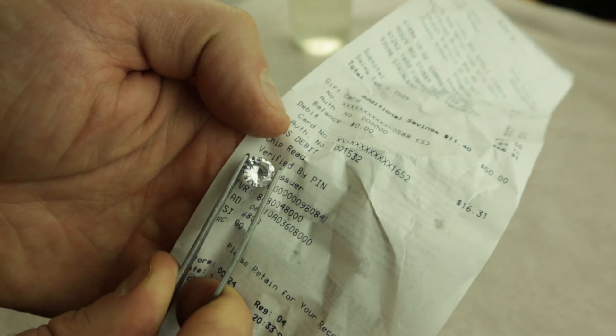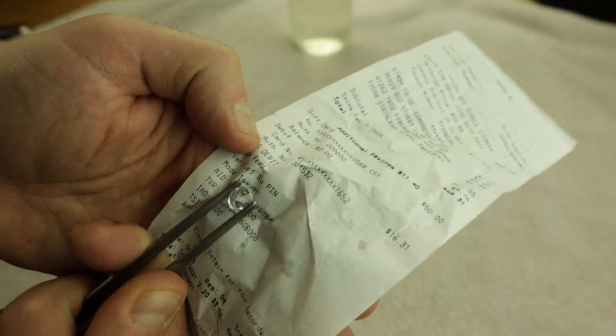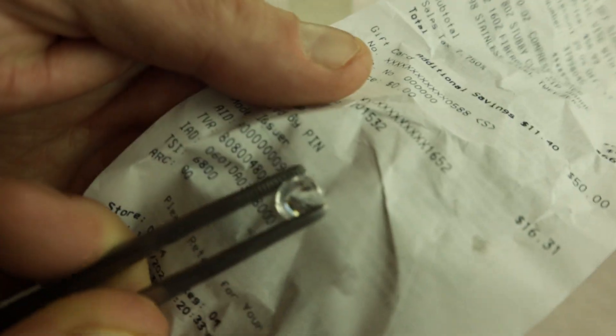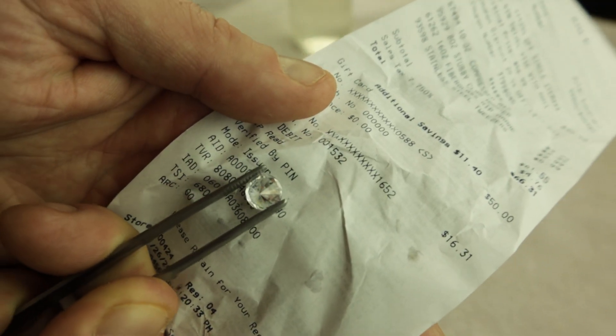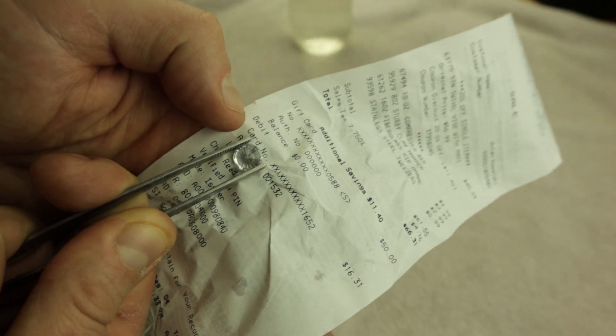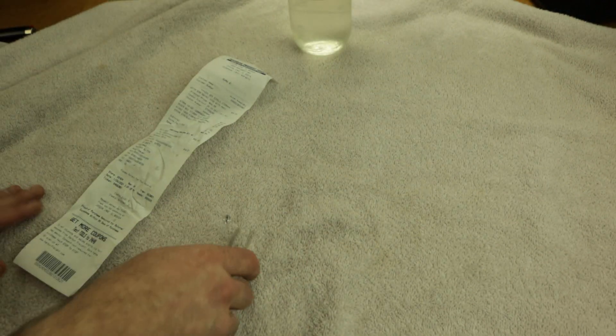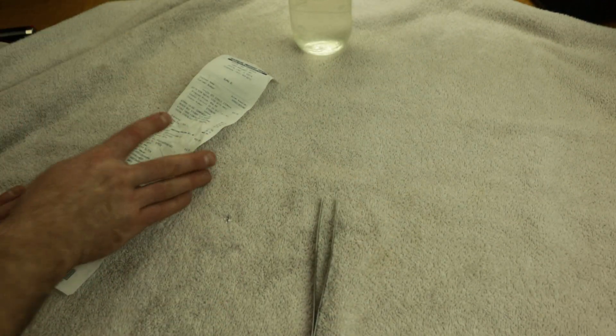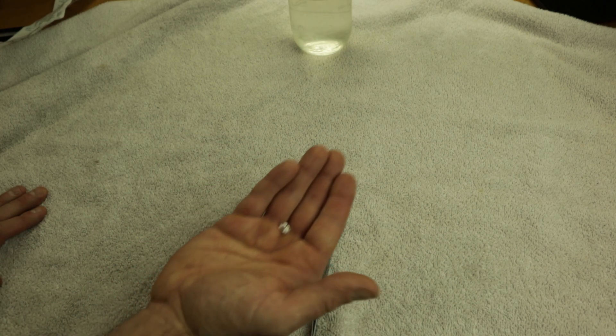But as you can see here you can't read anything through it. Even on this side you can slightly see through it a little but you can't make out what it actually says because it's reflecting the light in all different ways. So far based on all of our tests, it's led us to believe that it is a real diamond.